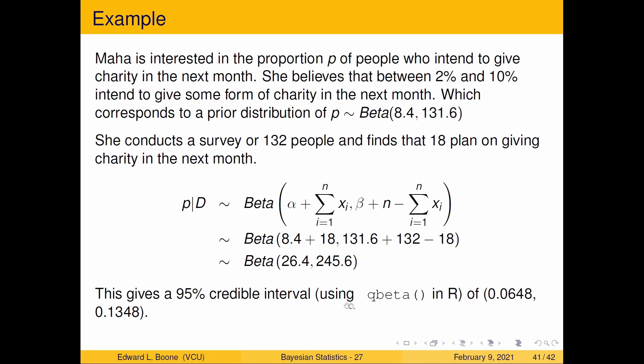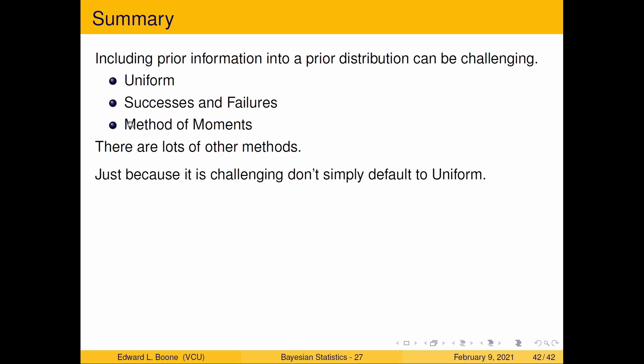If you go and put this into a credible interval using Qbeta, you'll end up with 0.0648 and 0.1348. Hey, we were able to see how much this changes. And notice that it was different than 2% and 10%. It's really between 6% and 13% now that we've seen the data.